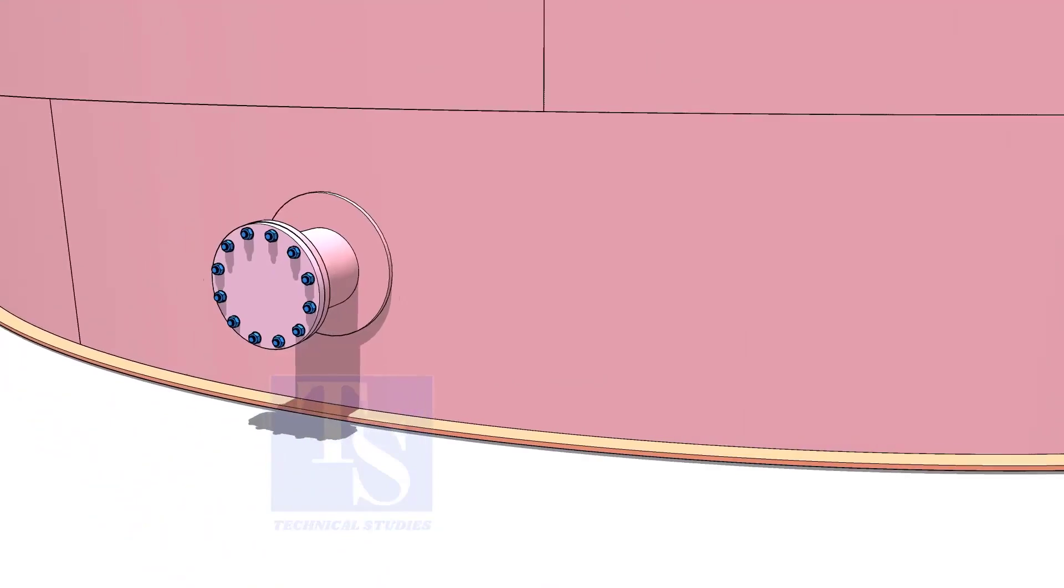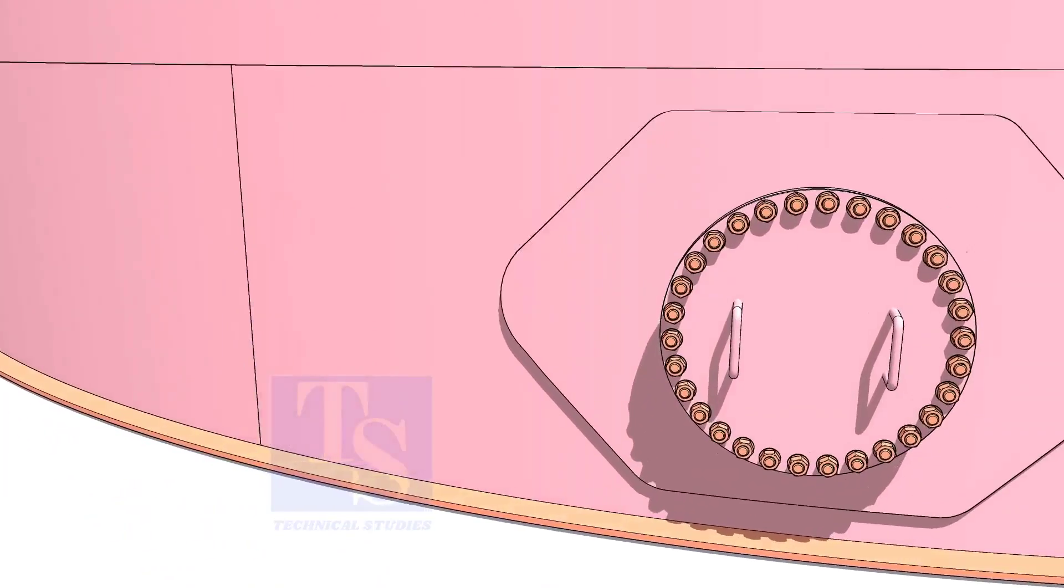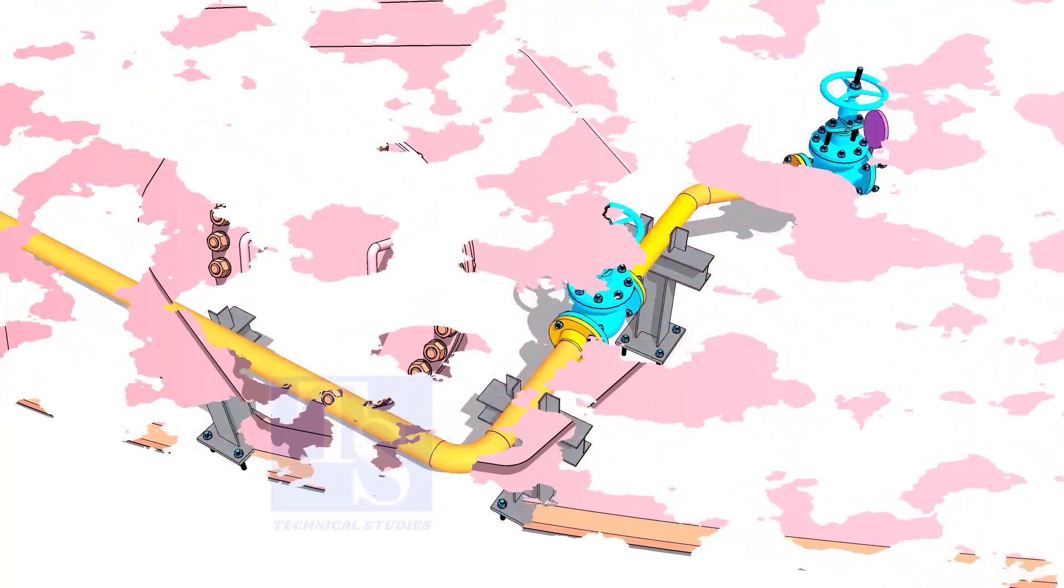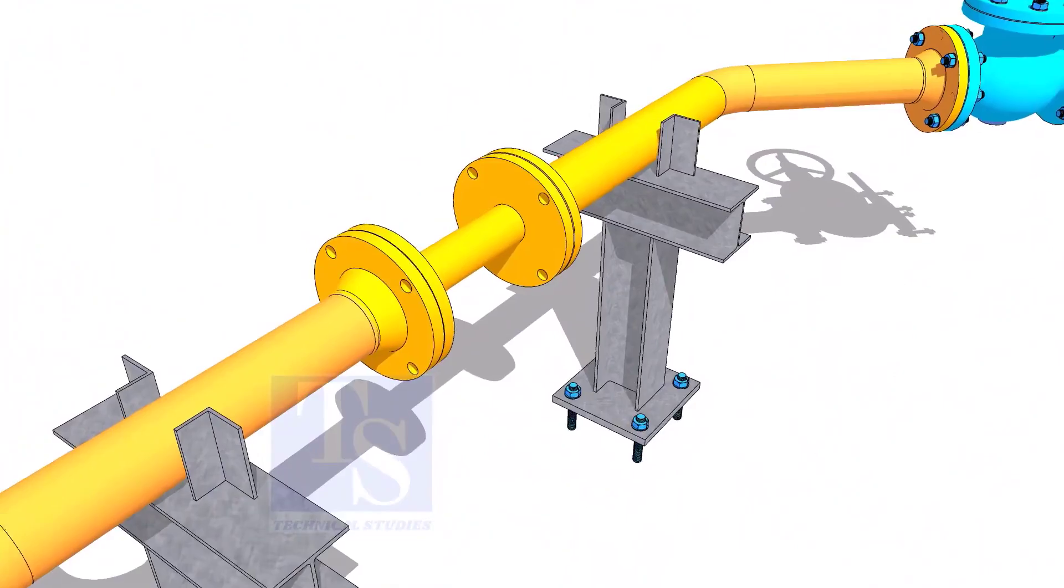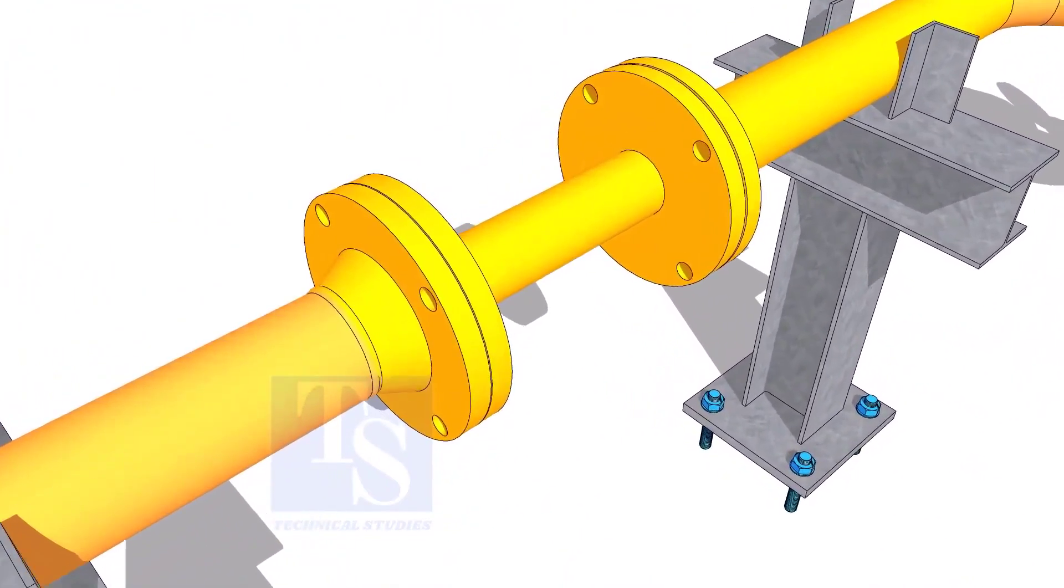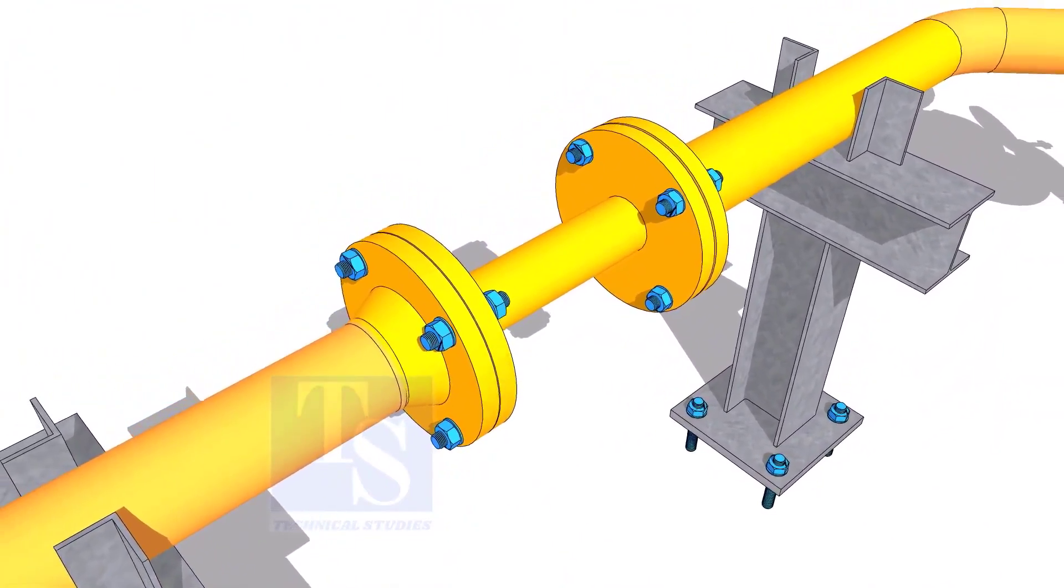Plate flanges are used for low-pressure services or to blind the nozzles of vessels, tanks, etc. for hydrotest purposes. Other use of plate flange is making temporary spools to replace valves and equipment on a piping system.